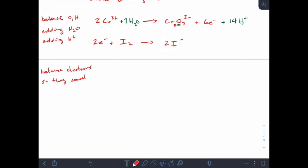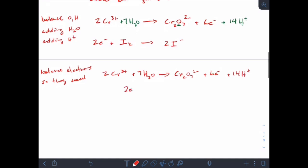So we're going to say 2Cr3 plus, plus 7H2O gives us Cr2O7 2 minus plus 6 electrons and 14 protons. And then in my next equation, I have 2 electrons plus I2 gives us 2I minus. So I've got 6 electrons in my top equation, 2 electrons in my bottom. I need the same in my bottom. So I'm going to multiply this entire equation by 3.